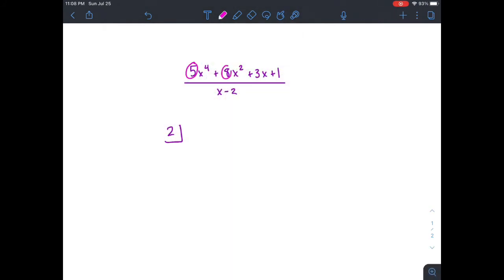So notice the coefficients here: 5, 8, 3, 1. But remember, there is a 0 that we can't see because that's for the x cubed term. So we just write each of the coefficients just like that.